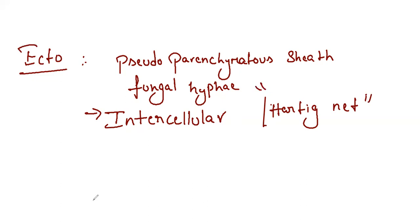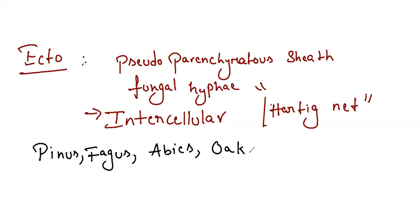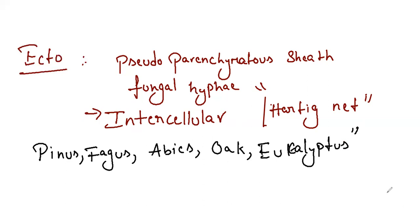Ectomycorrhizae occurs mainly in Pinus, Fagus, Abies, Oak, and Eucalyptus — the tallest angiosperm. The fungus associated is mainly basidiomycetes, which includes mushrooms, smuts, rusts, and puffballs. Sexual organs are absent in basidiomycetes, and the sexual spores are called basidiospores.